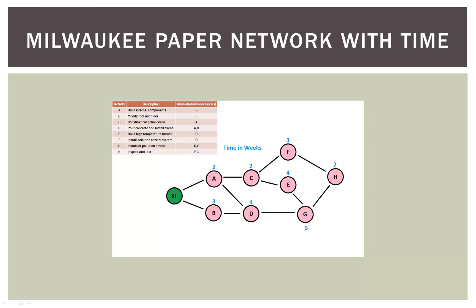If you remember, we finished with this diagram in our last video. We laid out our project network using activity nodes and added in the time factor at each node, as seen in blue. Now we're actually going to start here when we do our critical path analysis and our forward and backward passes, but we're going to expand upon this diagram by building a more complex one with more information in it.